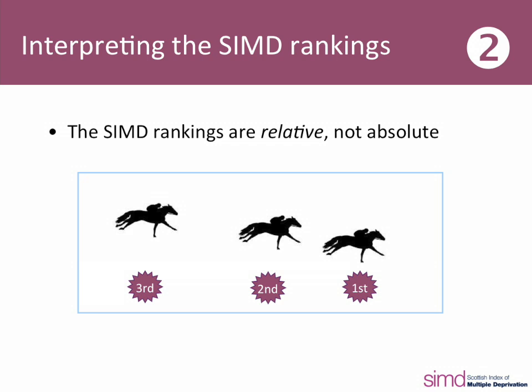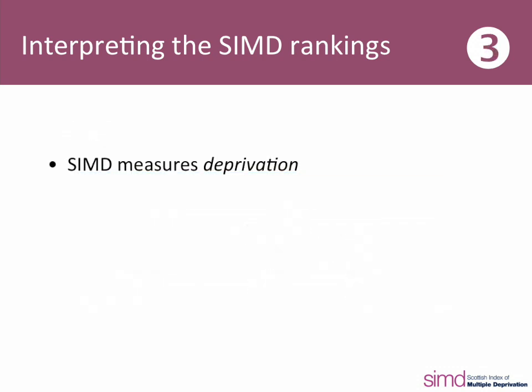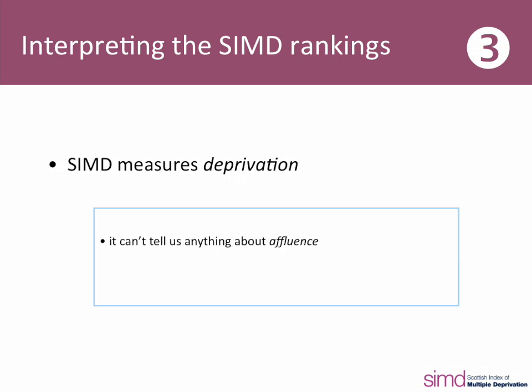But if you had the times from that race, you'd be able to identify how much better one person was than another, and the same goes here. Finally, the SIMD measures deprivation — it doesn't measure affluence. For areas at the lower end of the rankings, closer to rank 6,505, all we can say is they're less deprived. We can't say that one area is more affluent than another, even relatively, because the indicators used in the SIMD measure specifically issues around deprivation.